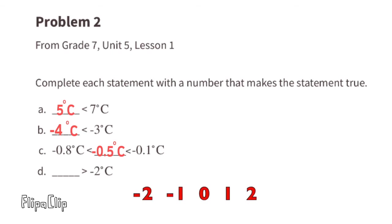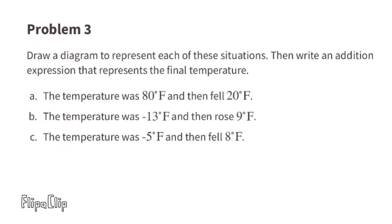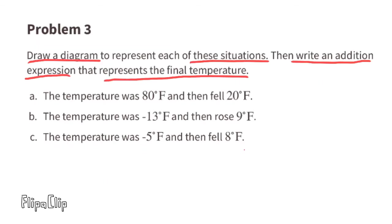We need a number to the right of negative 2 on a number line. Negative 1 is to the right of negative 2, so we can go with: 'negative 1 degrees Celsius is greater than negative 2 degrees Celsius.' Problem 3: draw a diagram to represent each situation, then write an addition expression that represents the final temperature.